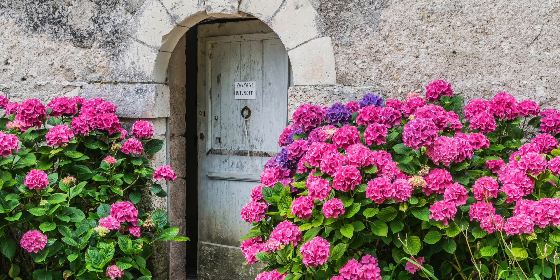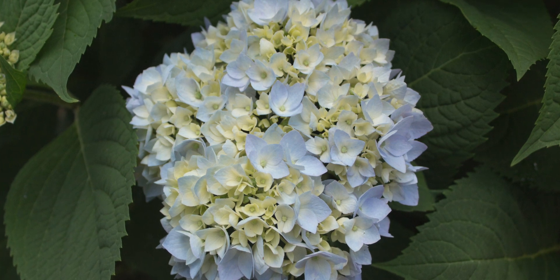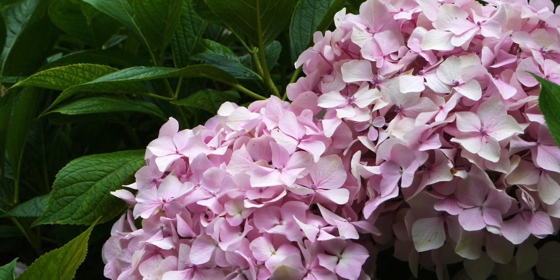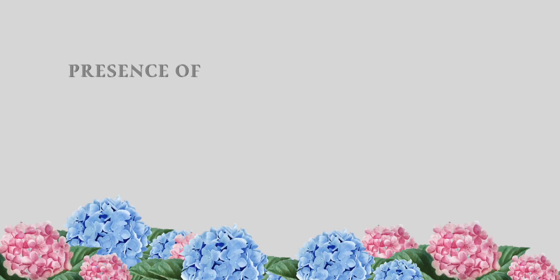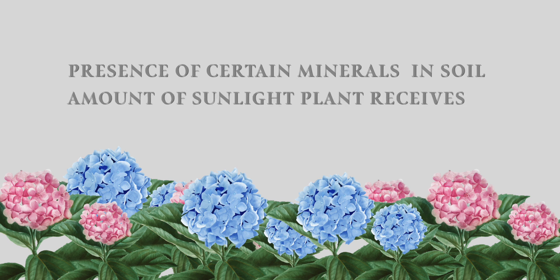While hydrangeas can be used as an indicator of soil pH, it is important to note that the color of their flowers can also be influenced by other factors, such as the presence of certain minerals in the soil and the amount of sunlight the plant receives. Additionally, the pH of the soil can change over time, so it is important to regularly test and adjust the pH as needed to ensure that the plant is getting the optimal growing conditions.